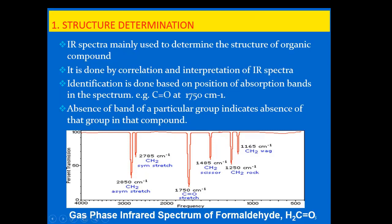The first application is structure determination. IR spectroscopy is mainly used to determine the structure of organic compounds and the functional groups present in them. This is done by correlation and interpretation of IR spectra present in the library. Identification is based on the position of the absorption band in the spectrum — for example, the carbonyl group absorbs at 1750 per centimeter.